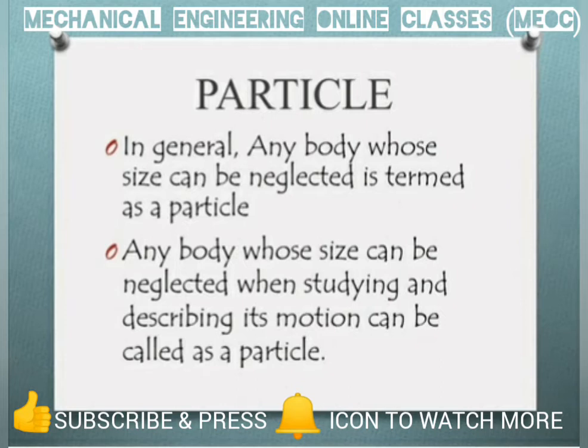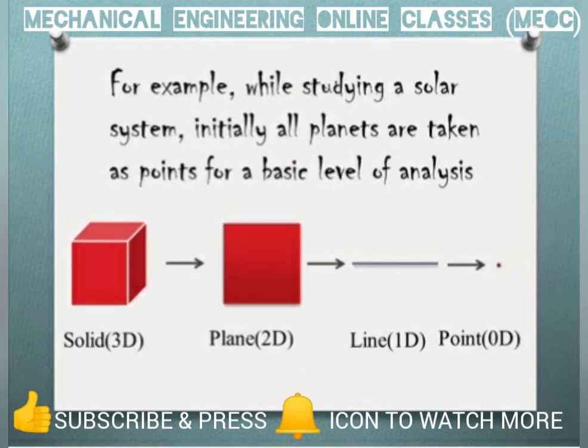For example, when we take an example of a solar system, all of the objects involved in them are celestial — very huge with heavy masses and diameters. But still, when we are studying a solar system in general, they are considered to be particles.